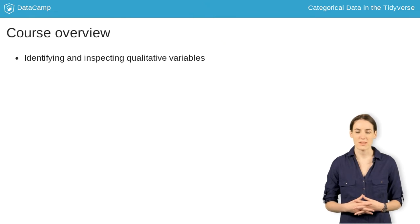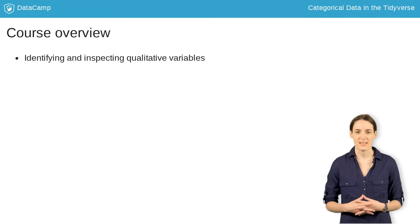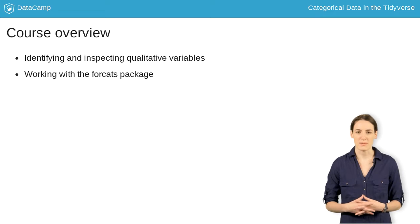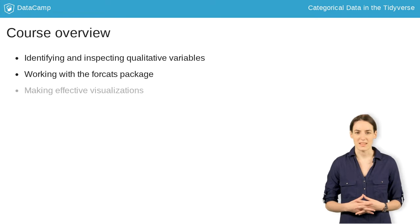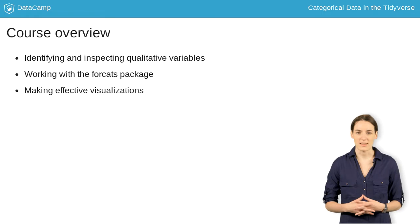We'll start with learning about how to identify and inspect these variables in a dataset. Then we'll move to using the forcats package by Hadley Wickham to manipulate the variables by renaming categories, changing their order, and collapsing multiple groups into one. In the third chapter, we'll see how we can make effective visualizations by combining forcats with other tidyverse packages like dplyr, tidyr, stringr, and ggplot2.